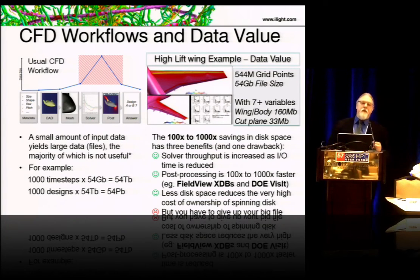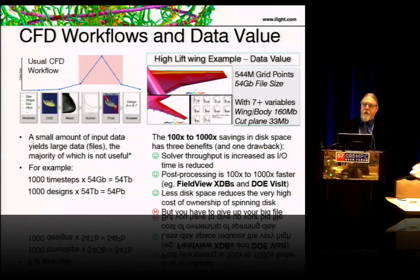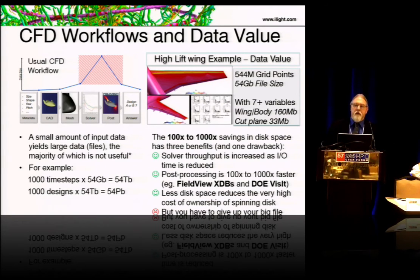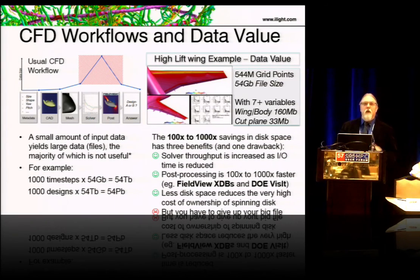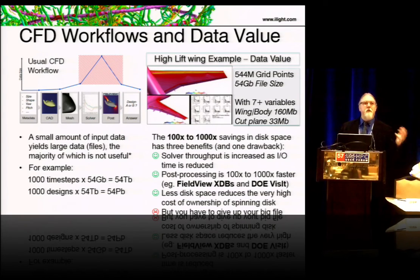Classically, people build a mesh, do the calculation, and get large files. There's one example in the top right corner — just a wing and half a body in a high-lift configuration. One case is 54 gigabytes of disk file. If you redo that with an unsteady calculation run for a thousand time steps, that's 54 terabytes of storage. And if you want to do a thousand designs, that's 54 petabytes of storage — obviously too much to do anything with.